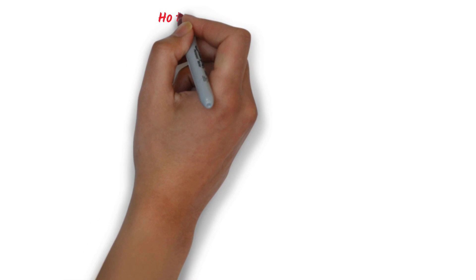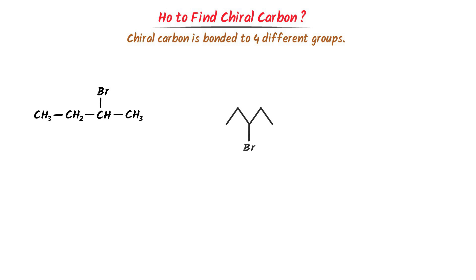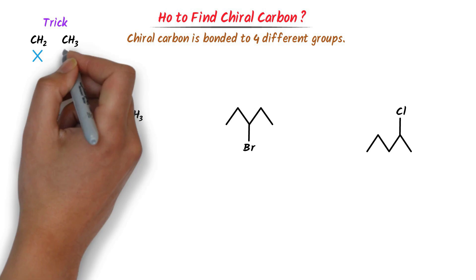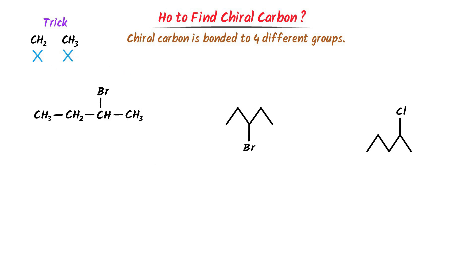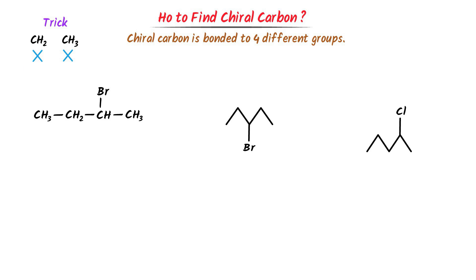Now we will learn how to find chiral carbon. We know that chiral carbon is bonded to four different groups. Now consider these organic molecules. Note down this important trick: whenever you see CH2 or CH3, cross them because they are not chiral carbon. Now in the first case, this is CH3 — I cross it because it is not a chiral carbon. This is CH3 — I cross it because it is not a chiral carbon.